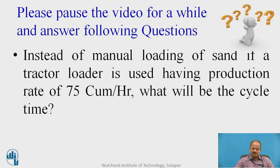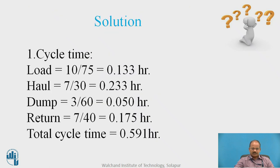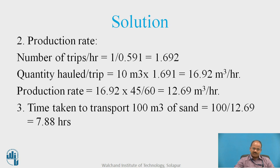Please pause the video. Instead of manual loading of sand, if a truck loader is used having a production rate of 75 cubic meters per hour, what will be the cycle time? The solution: the total cycle time required is 0.591 hours. This changes because the loading time required manually was considerably higher compared to the loading time when using a loader. The production rate gives 1 divided by 0.591, which is 1.690 trips per hour, and the time taken to transport 100 cubic meters of sand is 7.88 hours.